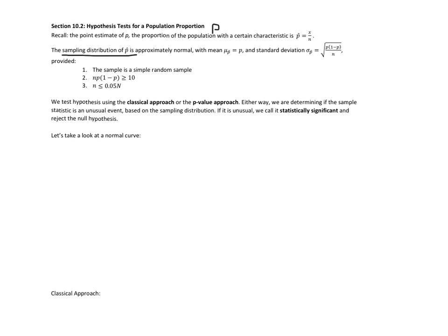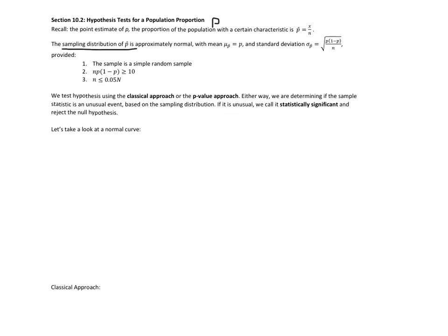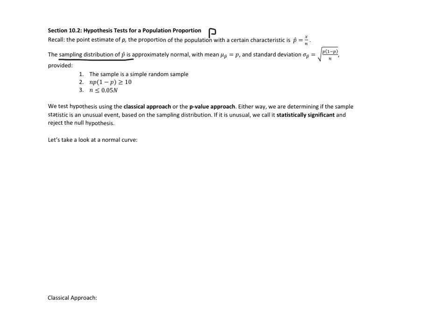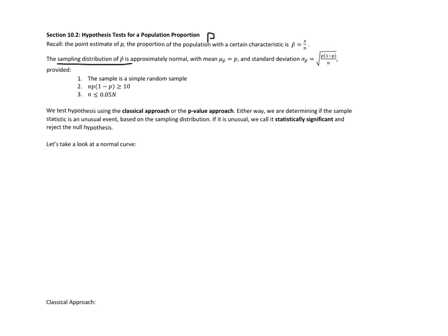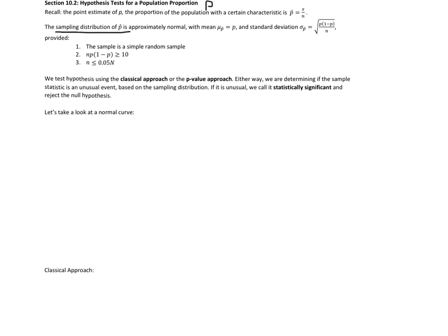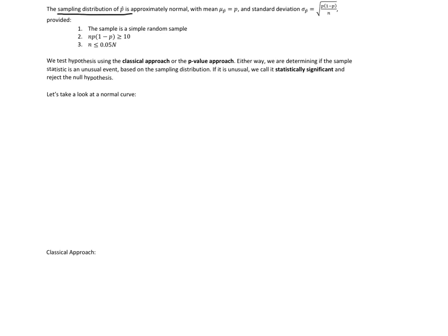We have two ways to test our hypothesis. We're going to see if our point estimate is considered unusual. We're going to use the classic approach or the p-value approach. Both those ways determine if an event is unusual based on the current status quo sampling distribution. If it's unusual, we call it statistically significant, and we reject the null hypothesis.